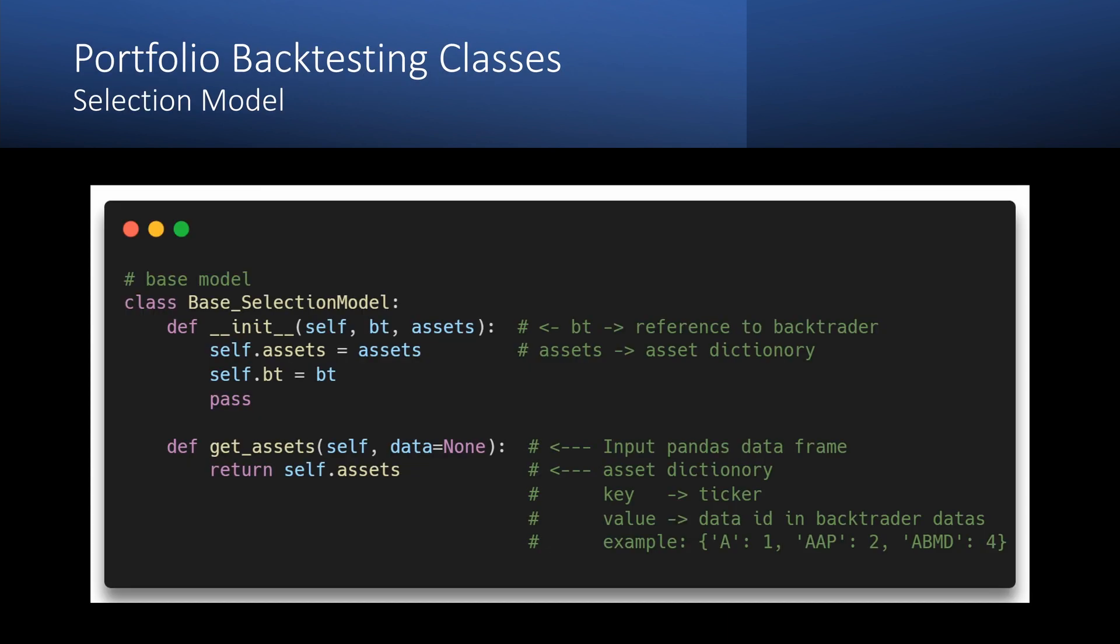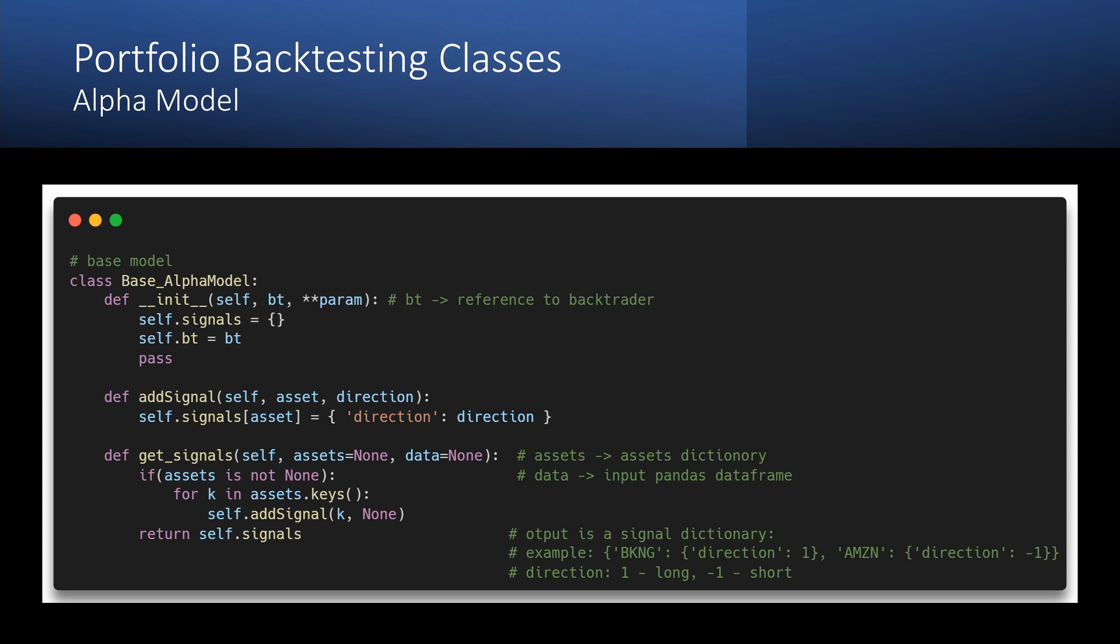So, the selection model receives as input a data frame with the close prices and returns a dictionary where the key is an asset ticker and the value is the index in the backtrader datas.